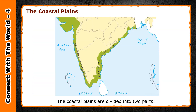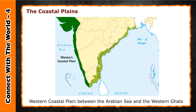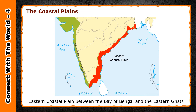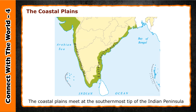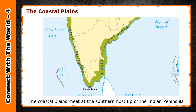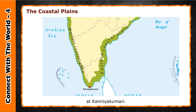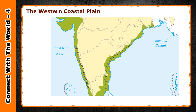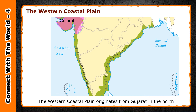The coastal plains are divided into two parts: the western coastal plain, between the Arabian Sea and the Western Ghats, and the eastern coastal plain, between the Bay of Bengal and the Eastern Ghats. The coastal plains meet at the southernmost tip of the Indian Peninsula at Kanyakumari.